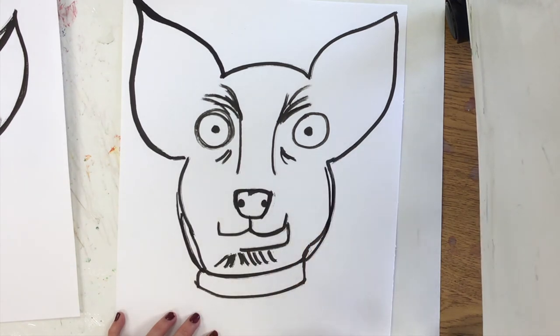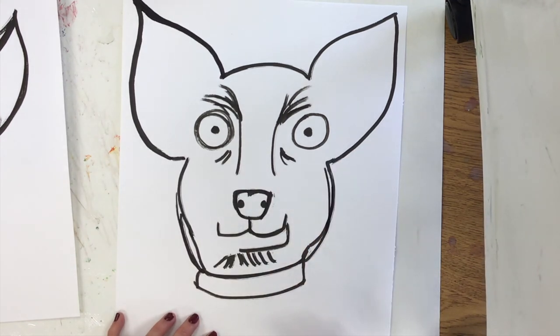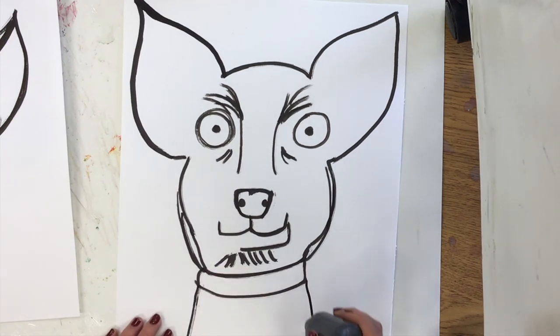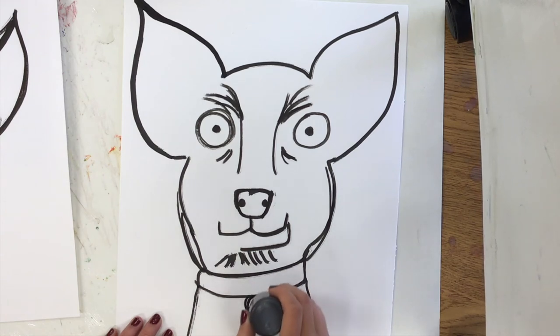Then I'm just going to have these lines extend off the paper. I could draw a little tag on my chihuahua. I could draw some more little lines to show that he's furry.